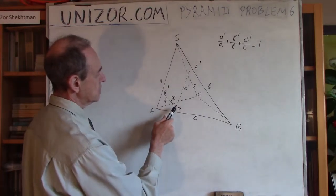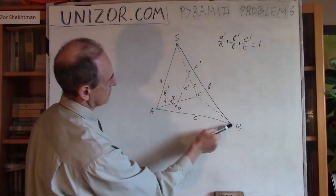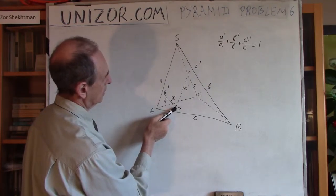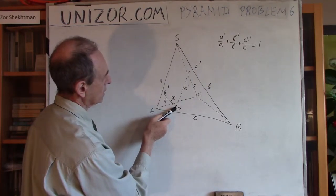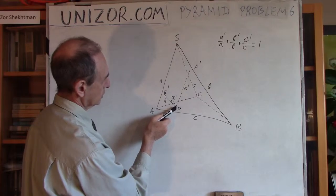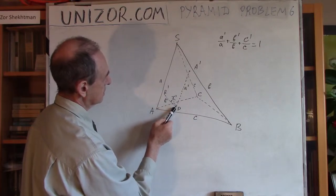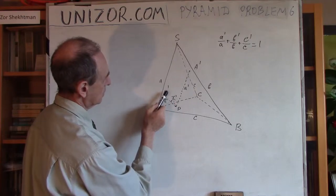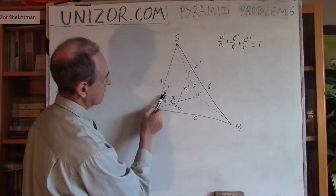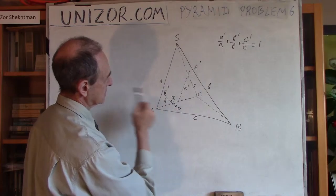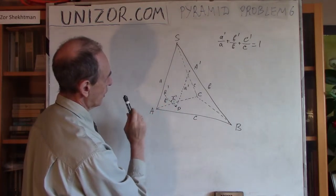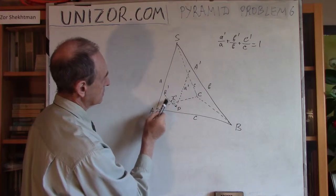Same thing for B. I'm constructing the line parallel from point P on the base to B prime, which hits the opposite face of the pyramid at some point B prime. And the length is lowercase b prime.